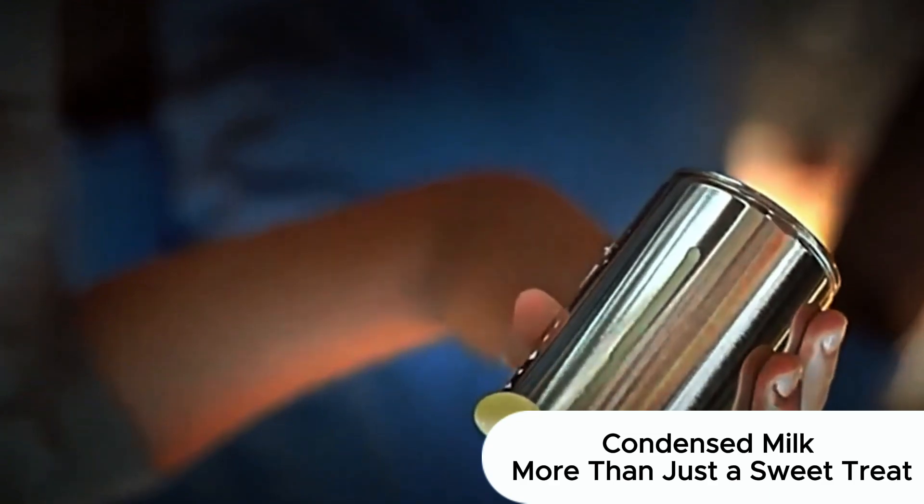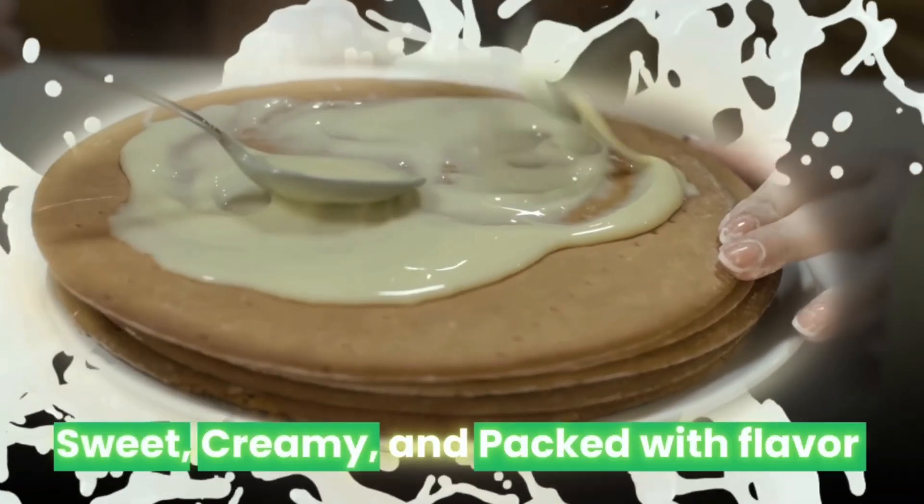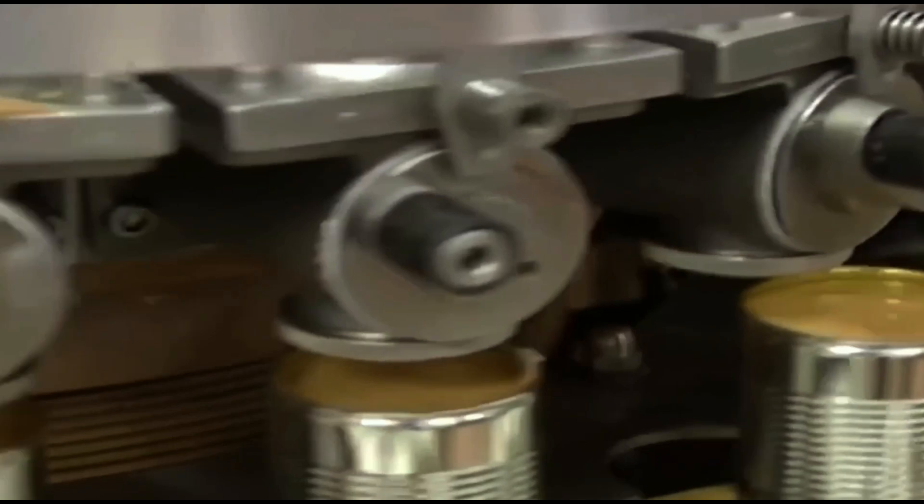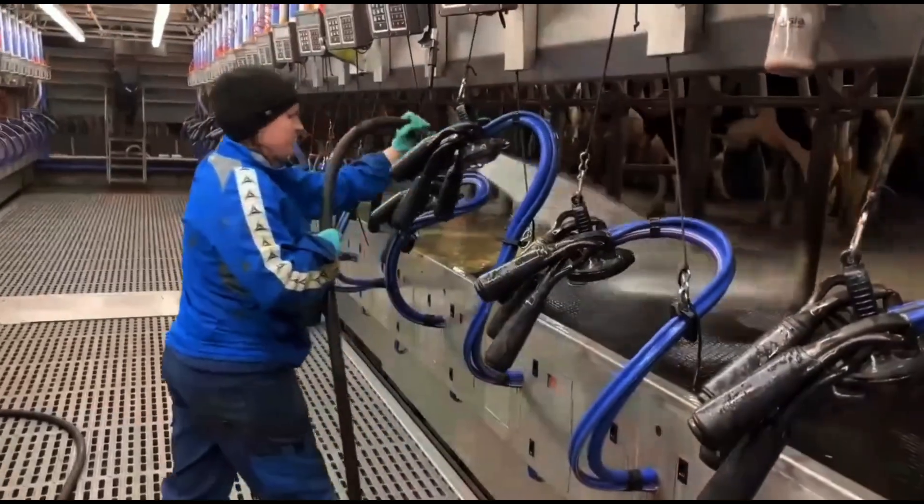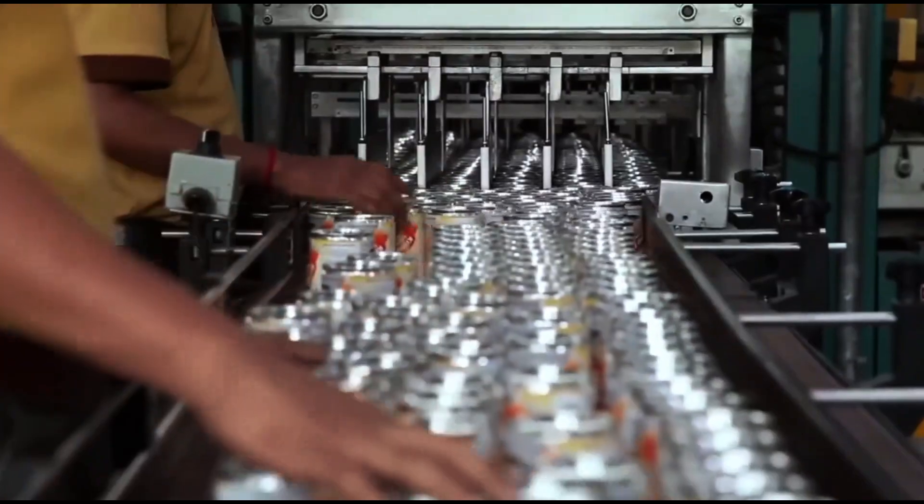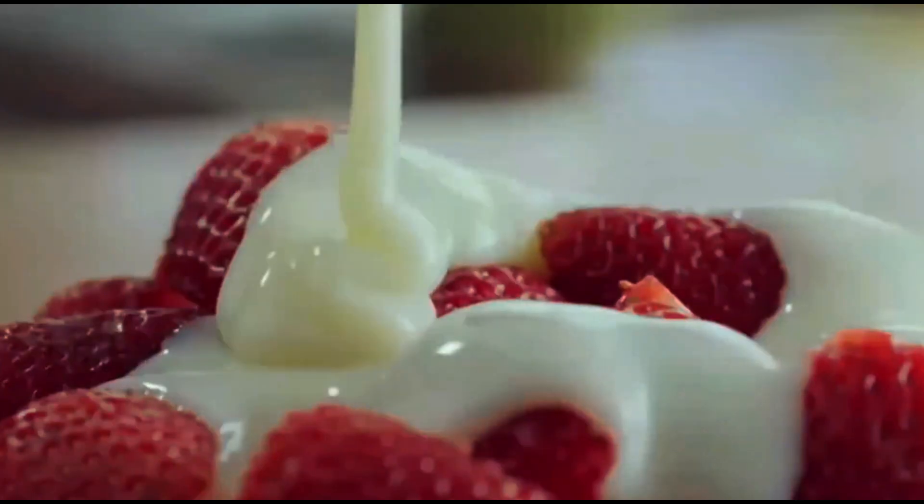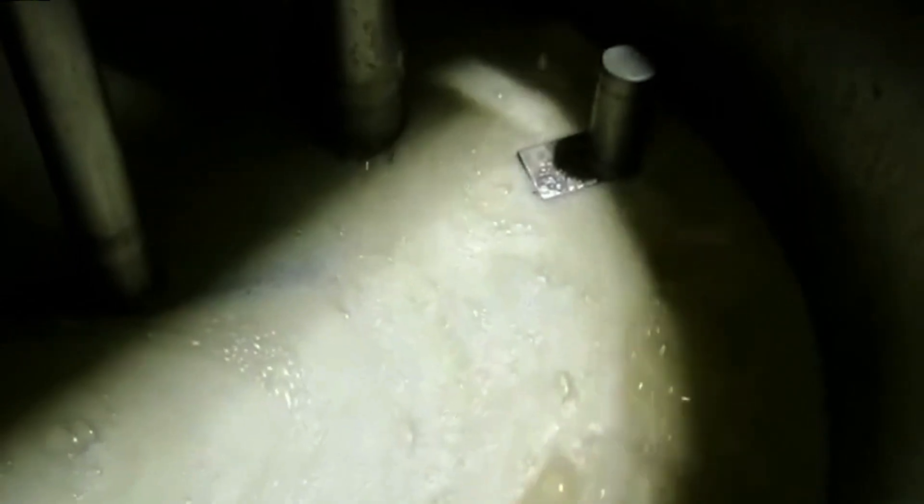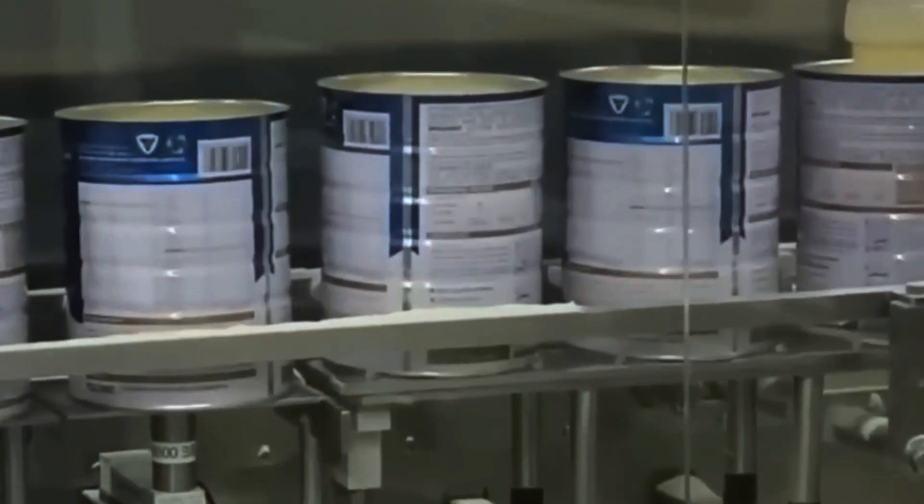Condensed milk isn't just a sugary addition to your morning coffee or homemade dessert. It's a product with nearly two centuries of history, woven into the cultural fabric of dozens of countries. Known for its high nutritional value, rich flavor and long shelf life, condensed milk has become a pantry staple. But how does ordinary milk transform into this thick, syrupy, sweet substance that can last for months without refrigeration? The answer lies in a precise balance of science, engineering and meticulous quality control at every step. The production of condensed milk is a symphony of technology and tradition, where nothing is left to chance.